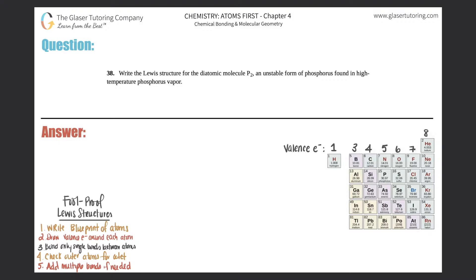Number 38. Write the Lewis structure for the diatomic molecule P2, an unstable form of phosphorus found in high temperature phosphorus vapor.